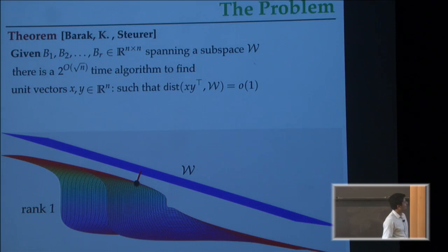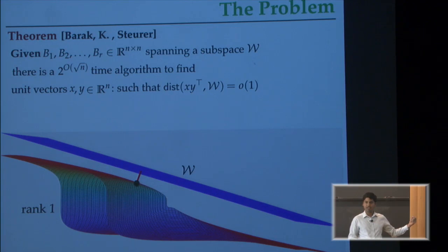Now I can state the result. This is joint work with Boaz Barak and David Steurer. What we proved last year was that if you are given any collection of n by n matrices b₁, b₂, up to bᵣ - this is supposed to be a basis for the subspace - they can be of arbitrary rank. Then in 2^√n time, I'll be able to find unit vectors x and y such that the rank 1 matrix xy transpose defined by them is going to be close with respect to the Hilbert-Schmidt metric to the subspace W defined by b₁, b₂, up to bᵣ. As I said, 2^O(n) was your benchmark. This is a non-trivial algorithm. I'm not going to try to convince you why 2^√n is interesting.